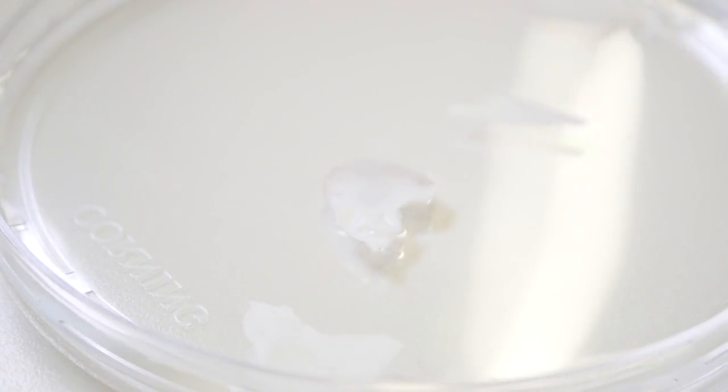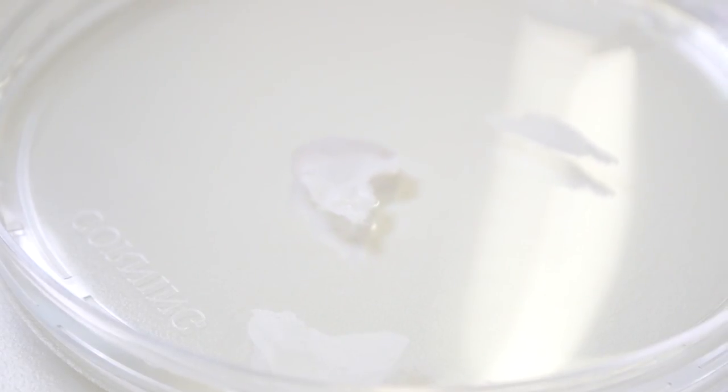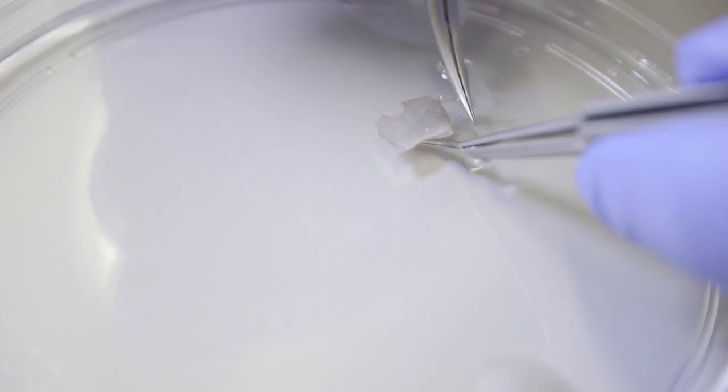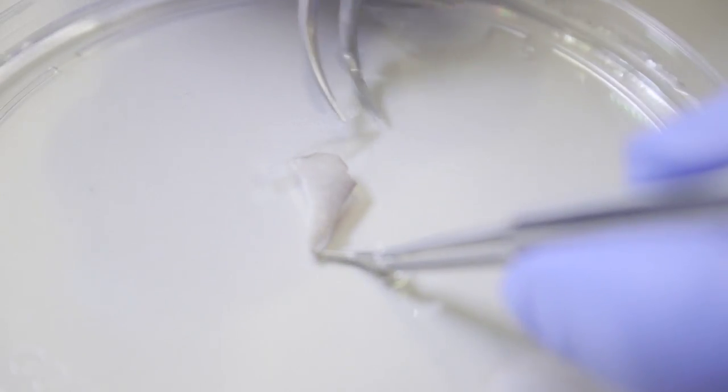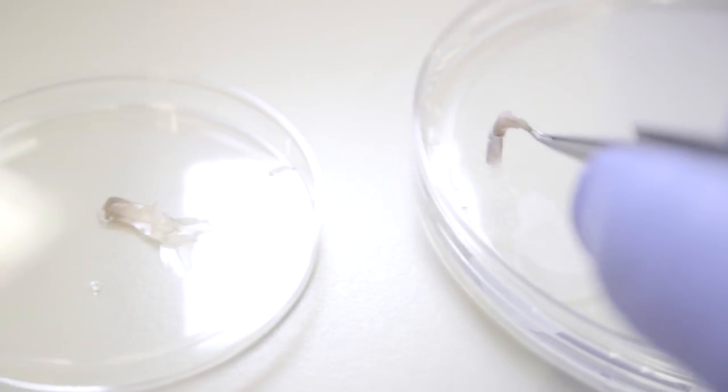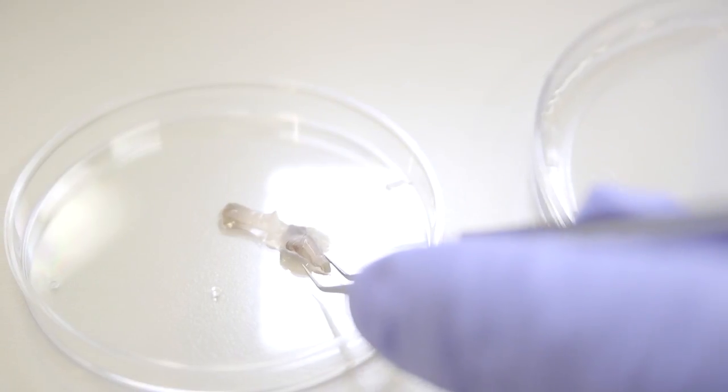This sheet is very delicate, so care must be taken not to rip it. The semi-transparent epidermal sheet should be left afloat on the PBS, whilst the dermis removed from underneath should be disposed of in the small petri dish.